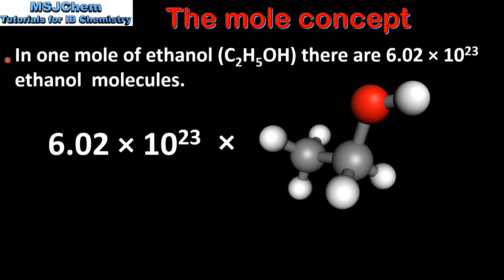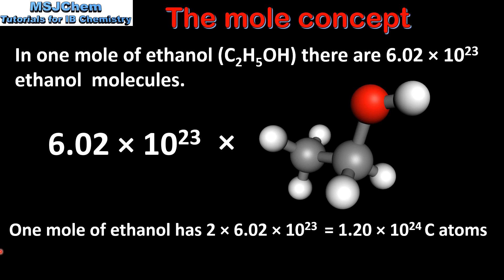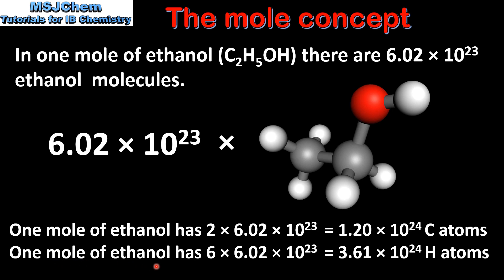In one mole of ethanol, which is C₂H₅OH, there are 6.02 times 10 to the power of 23 ethanol molecules. Therefore, one mole of ethanol has two times the Avogadro constant of carbon atoms, because a molecule of ethanol consists of two carbon atoms, giving us 1.20 times 10 to the power of 24 carbon atoms. If we want to know the number of hydrogen atoms in one mole of ethanol, we multiply the Avogadro constant by 6, because one molecule of ethanol consists of six hydrogen atoms, giving us 3.61 times 10 to the power of 24 hydrogen atoms.